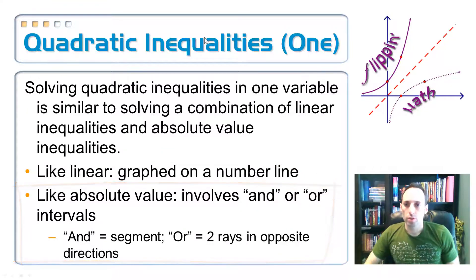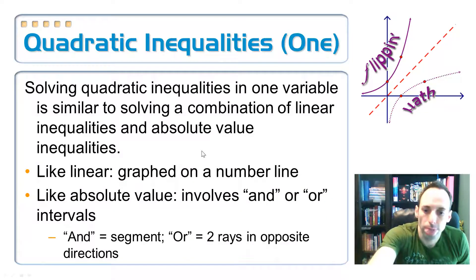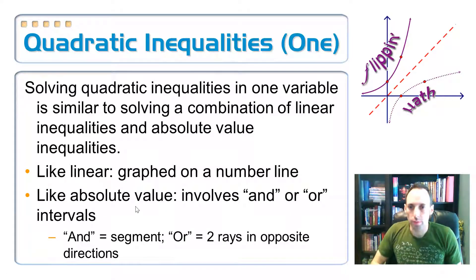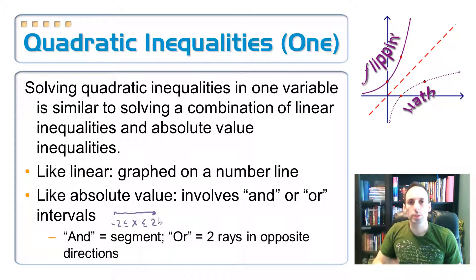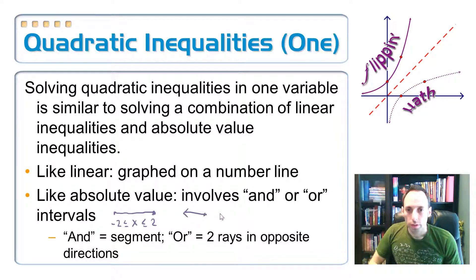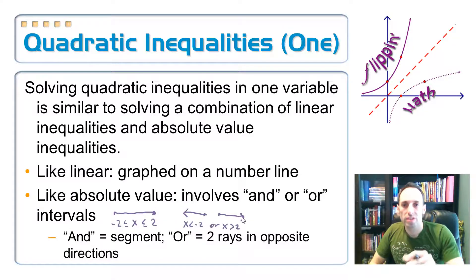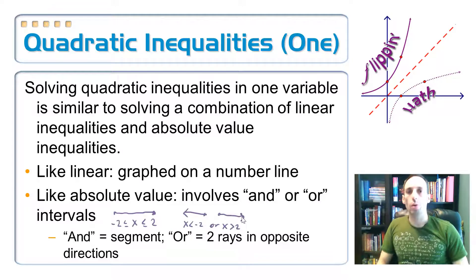As a reminder, an 'and' inequality is a segment — for example, negative 2 ≤ x ≤ 2. An 'or' inequality has two rays with a gap in between, like x < −2 or x > 2. That's the kind of thing we'll have to do when solving quadratic inequalities with just an x.